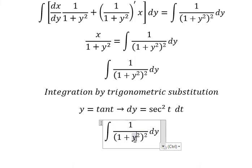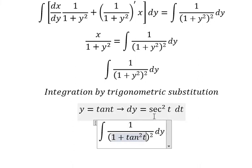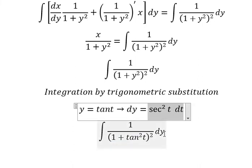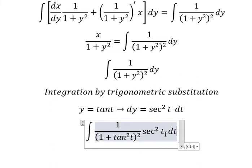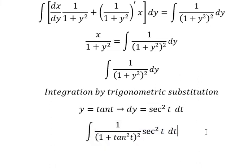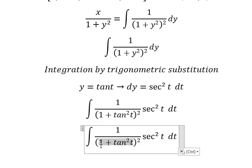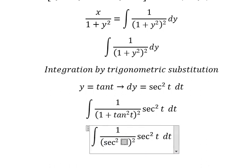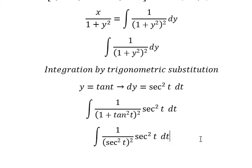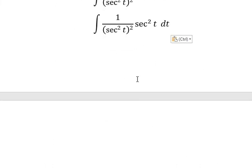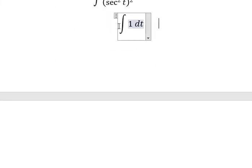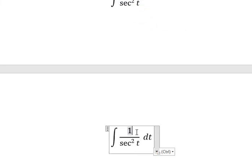So this one we have tan y, dy we change by this one. This one we get secant of t square. Now we simplify secant of t square on numerator and denominator, and we have one over secant of t square. And this one we have cos t square.